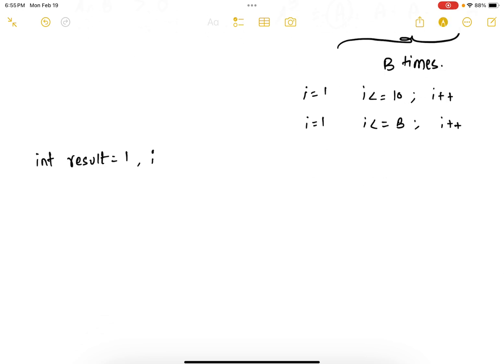int result equals 1, i, a, b. I can give a prompt to the user saying printf enter a and b. Then I can take it from the user using scanf.